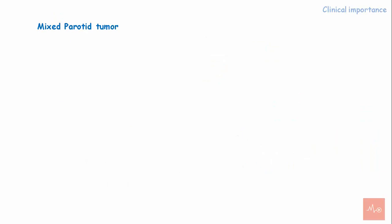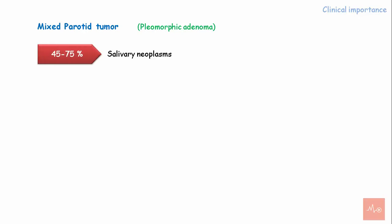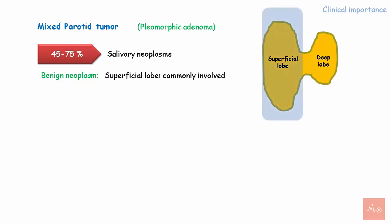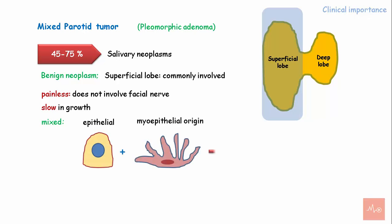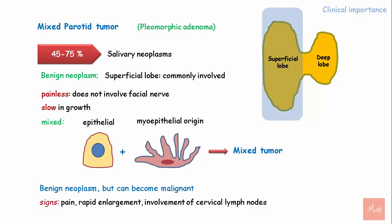Mixed parotid tumor, also called pleomorphic adenoma, accounts for 45–75% of all salivary neoplasms. It is a benign neoplasm of the parotid gland, mostly affecting the superficial lobe. It is painless as it does not involve the facial nerve and is slow in growth. Microscopically, it shows a mixed nature with epithelial and myoepithelial cells, hence the term pleomorphic. Although benign, it can become malignant, showing signs like pain, rapid enlargement, and involvement of the cervical lymph nodes.